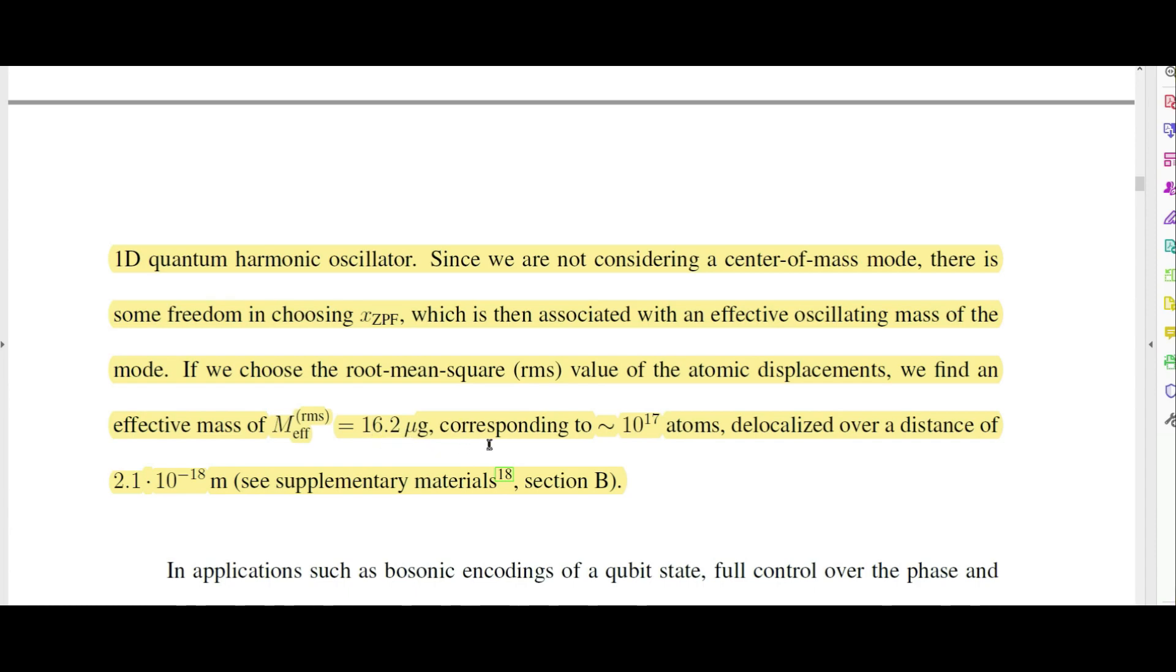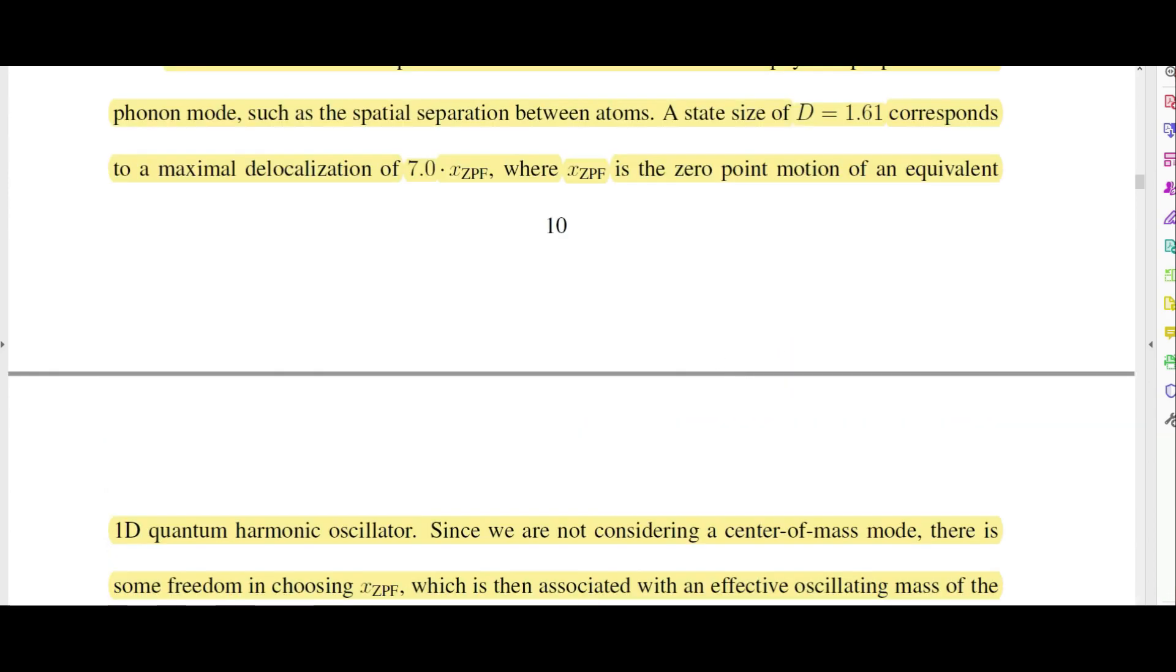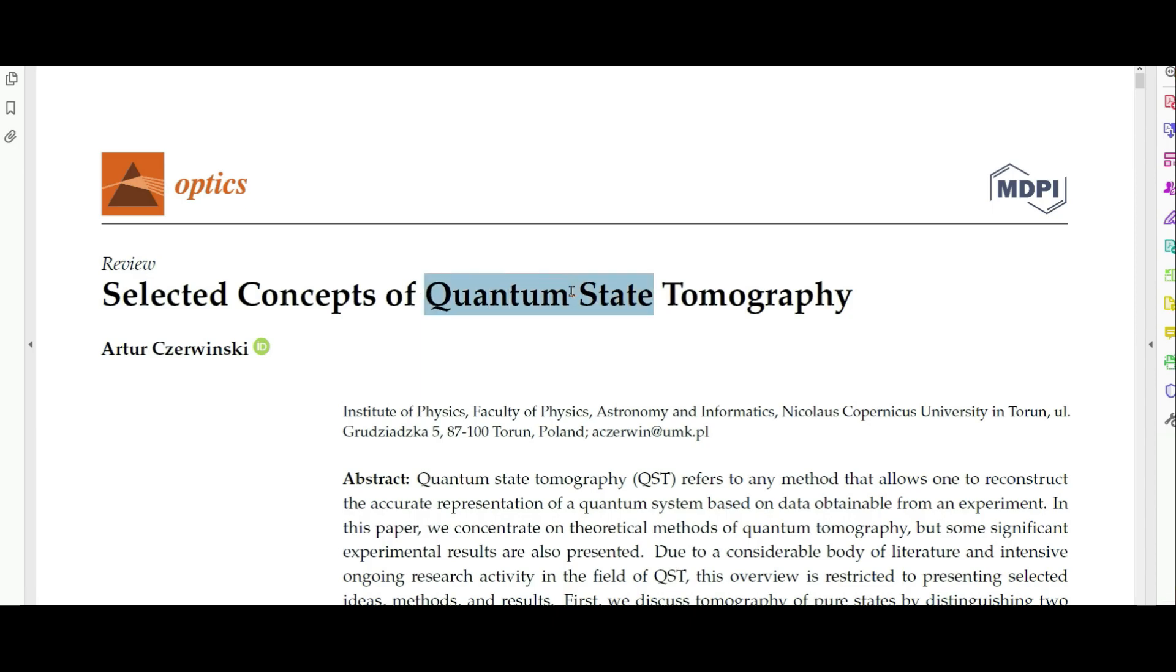That corresponds to 10 to the power of 17 atoms delocalized over a distance of 2.1 times 10 to the negative 18 meters. That's what they're saying—you have these two modes, these two opposite phases of this vibration of the crystal, which is coupled to this qubit. Here is where my caveat that I mentioned at the beginning comes in. The way they're measuring this is using something called quantum state tomography.